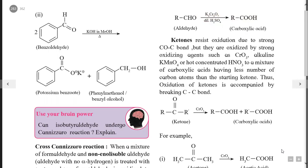A similar reduction of the carbonyl group to CH2 but using a different reagent is Wolff-Kishner reduction. The reagent is hydrazine (NH2–NH2) followed by ethylene glycol and KOH. The general equation: C=O reacts with hydrazine (NH2–NH2), eliminating one H2O molecule to give a hydrazone (C=N–NH2). When this hydrazone is treated with KOH and ethylene glycol, the carbonyl group is reduced to CH2 and nitrogen gas is released as a side product.